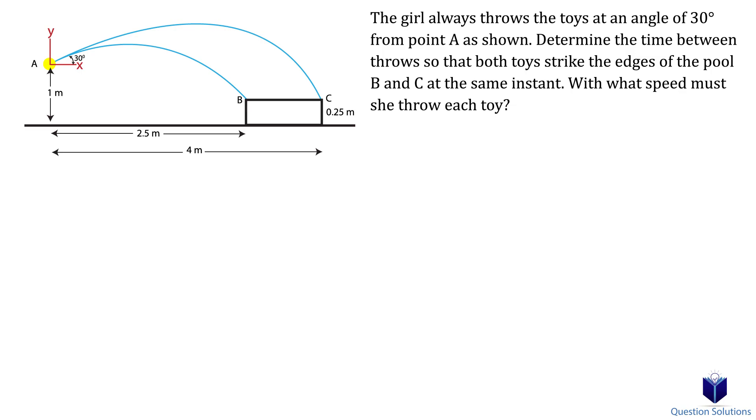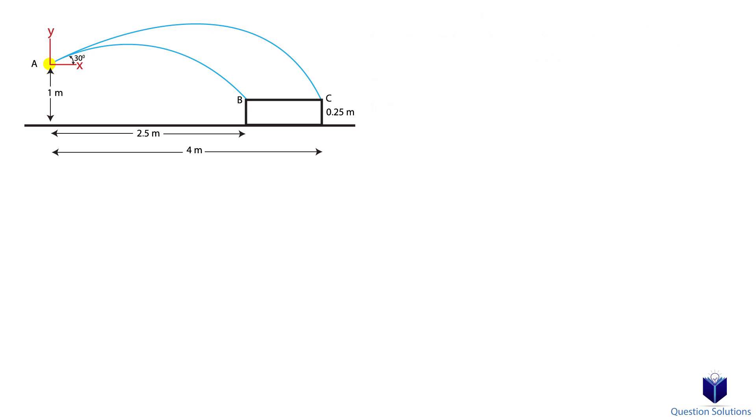Using our simplified diagram and our coordinate system, let's write down what we know. The toy's starting location in the horizontal direction is at 0 meters, the final location xB is at 2.5 meters, and xC is at 4 meters. For the vertical direction, we have the starting location at 0 meters.